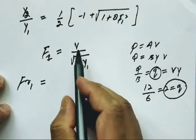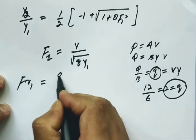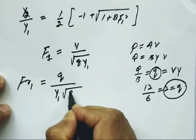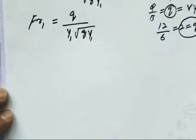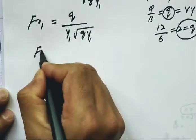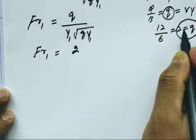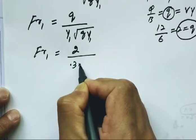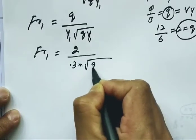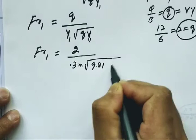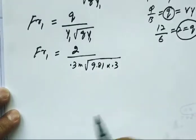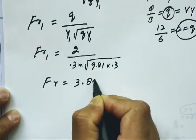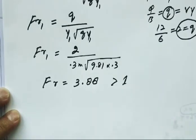Fr1 equals q divided by y1 under root g y1. So Fr1 equals 2 divided by 0.3 meters into square root of 9.81 times 0.3. When we solve this, the Froude number is 3.88.